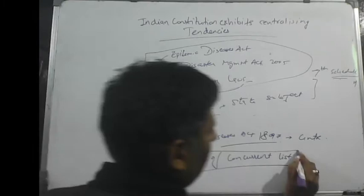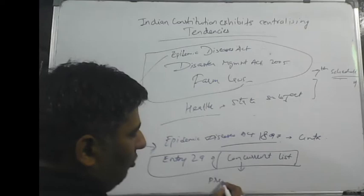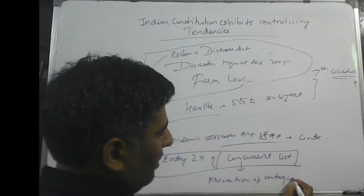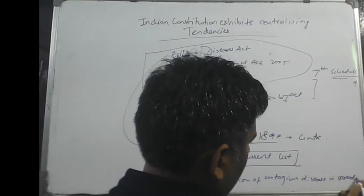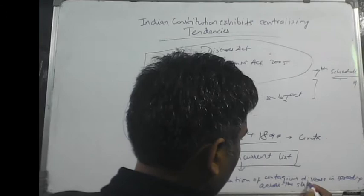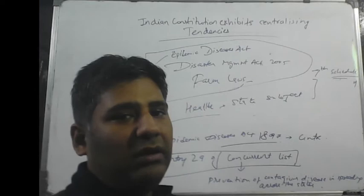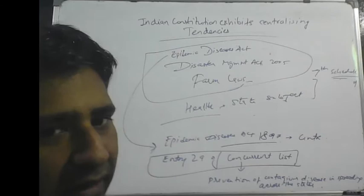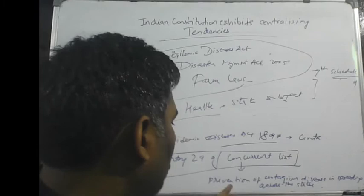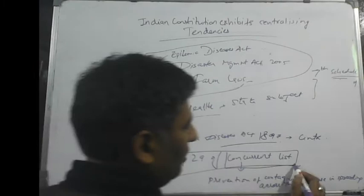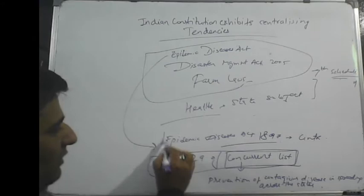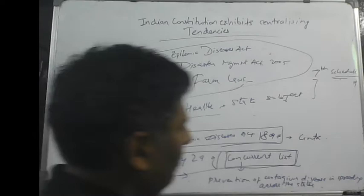Entry 29 of the Concurrent List is about the prevention of contagious diseases spreading across states. Contagious diseases are spread from human to human transmission or human to animal to human transmission. So it is the duty of both the center and states to make laws on contagious disease. The Epidemic Diseases Act has been passed by the center invoking the powers mentioned in Entry 29 of the Concurrent List.